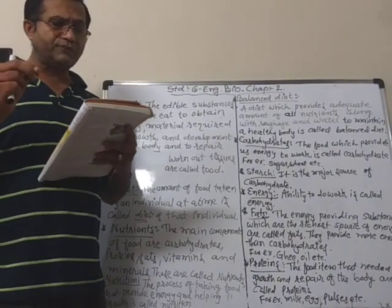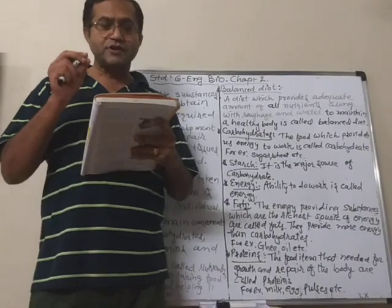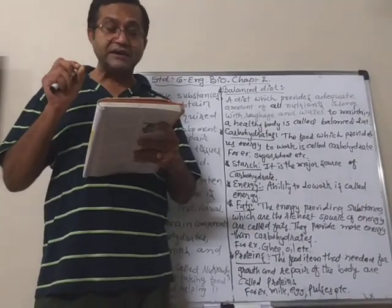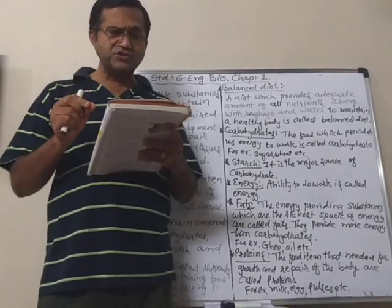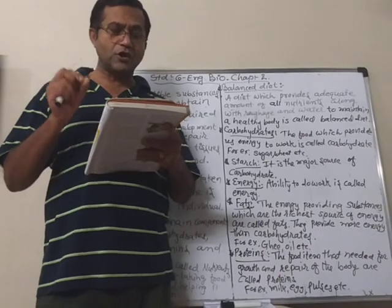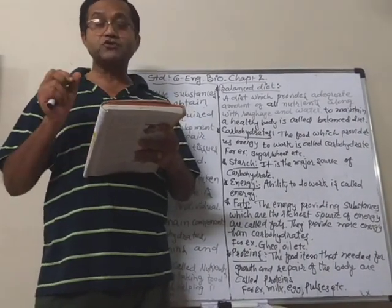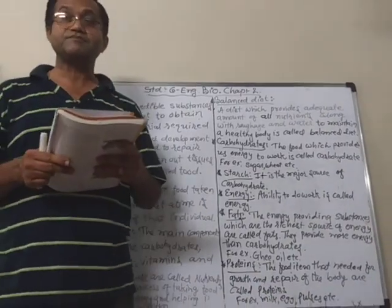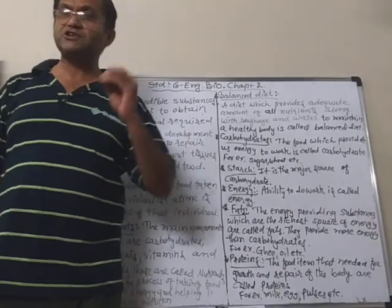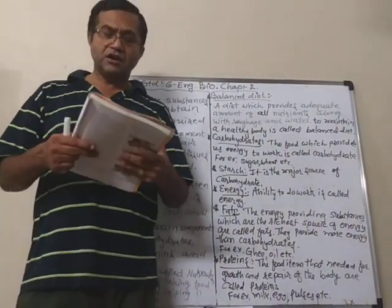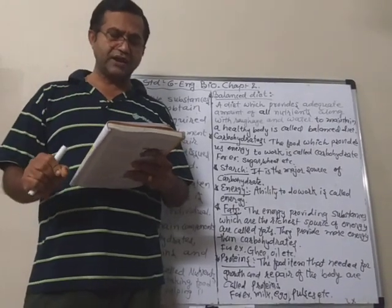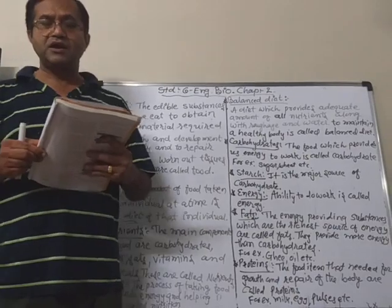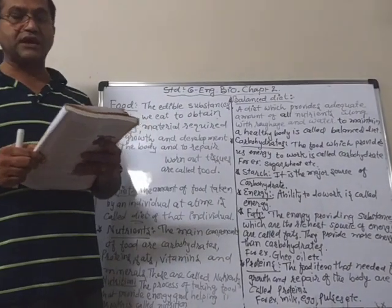To test for protein: if the food item is solid, first crush it and make a paste or powder. Put some of this in a clean test tube and shake it. Then using a dropper, add 2 drops of copper sulfate solution and 10 drops of caustic soda. Shake well — if the contents turn violet, that means it contains proteins.